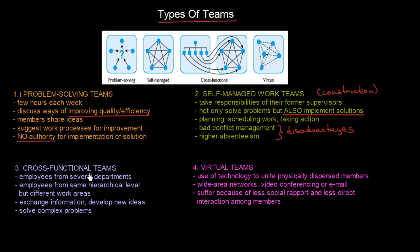Now let's go to the more interesting one — cross-functional teams. Employees from several departments come together to form one team. For example, you might have five departments: production, purchasing, marketing, sales, and research and development. This is closely connected with product teams. When a new product is to be designed, you want opinions from all departments. These employees are from the same hierarchical level but different work areas. They come together, exchange information, and develop new ideas. These kinds of teams are typically used to solve very complex problems, such as new product development.